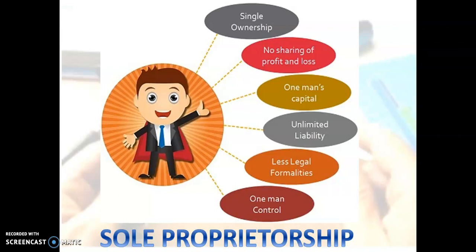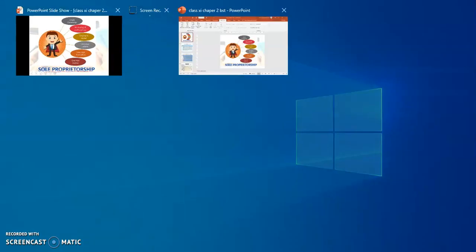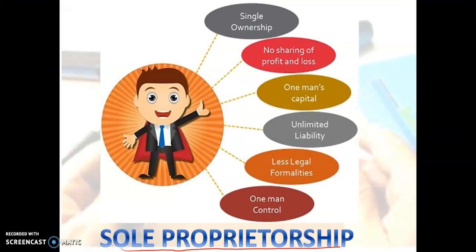Here I have written 'sole proprietorship.' The types of business organizations have been divided into some categories. The first category we will study, then we will move towards its features, its merits, its demerits. We will do the same for all types of business organizations. Sole proprietorship is one type of business organization.